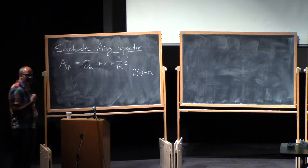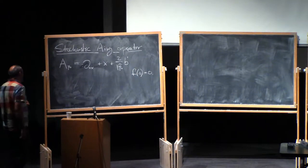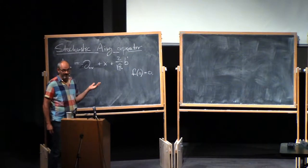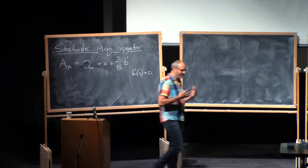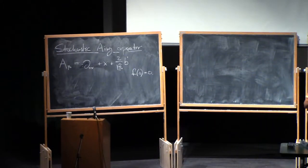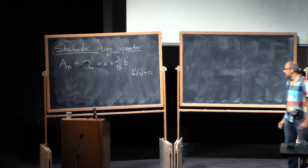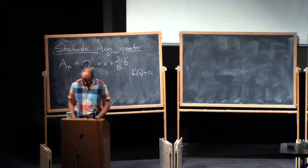I stated the precise theorem of what the convergence means — we're not going to prove that theorem, it's a little bit technical. But what I'd rather focus on today is how do you work with an object like this. This is not just some abstract beautiful thing; you can actually deduce a lot of the properties of the limit from here, and how you do that is what I'm going to talk about today.